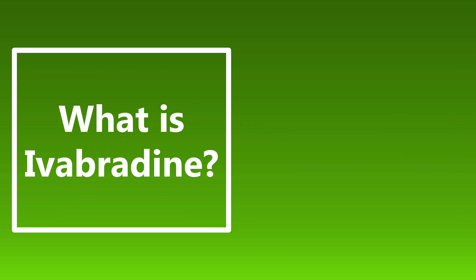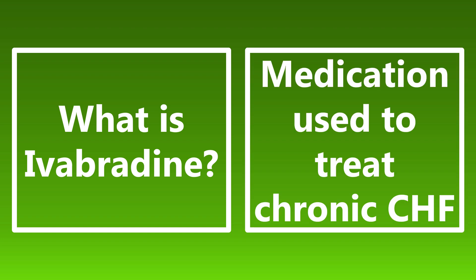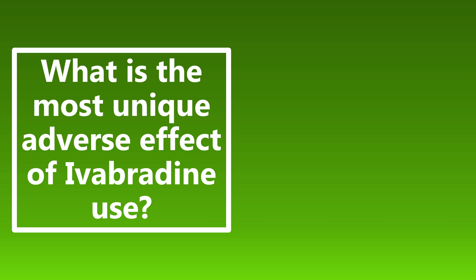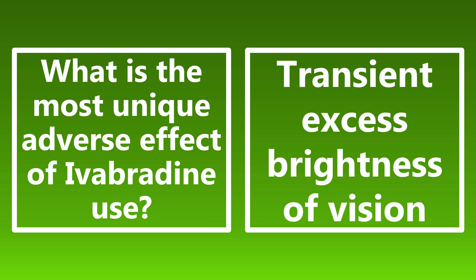What is ivabradine? Ivabradine is a medication used to treat chronic CHF. It works by inhibiting the SA node, decreasing the heart rate, and decreasing myocardial oxygen demand. What is the most unique adverse effect of ivabradine? It's transient excess brightness of vision, also called luminous phenomena — bright spots or bright circles around lights. No other medication causes this adverse effect, which is probably why it's so testable. Know that association: ivabradine can cause transient excess brightness of vision.